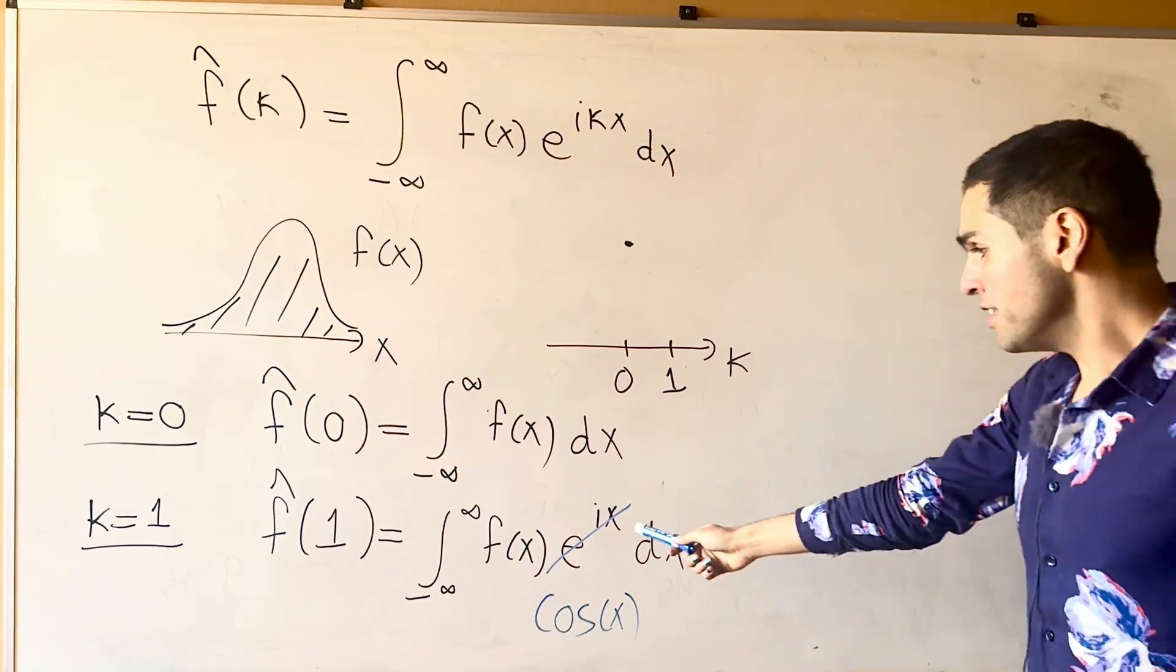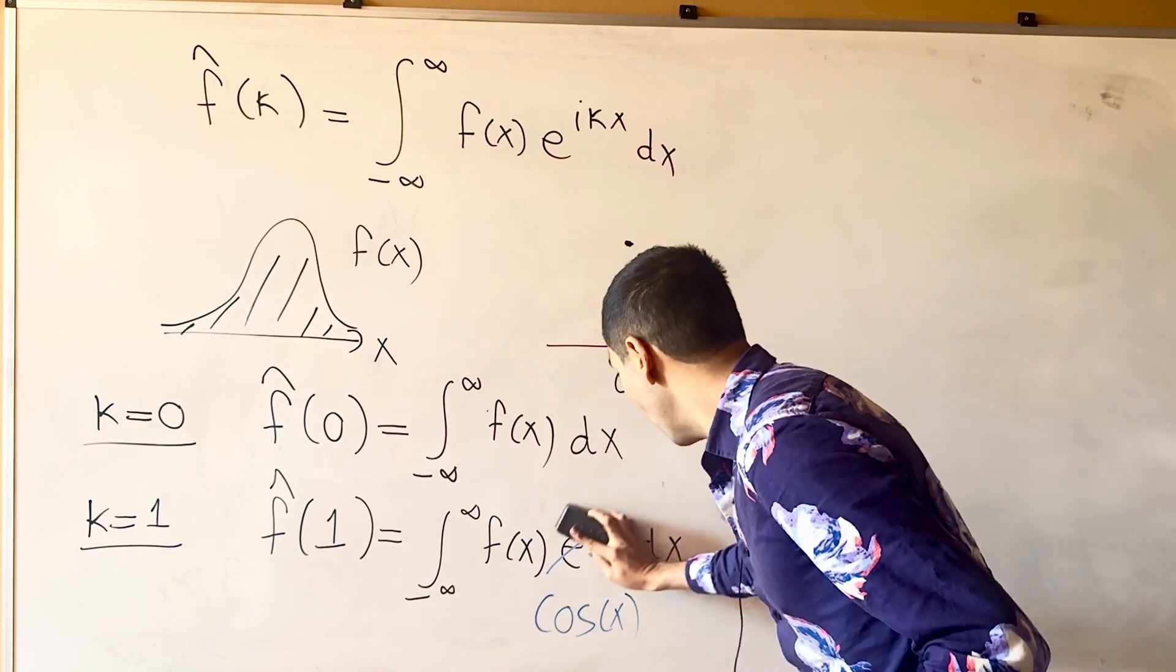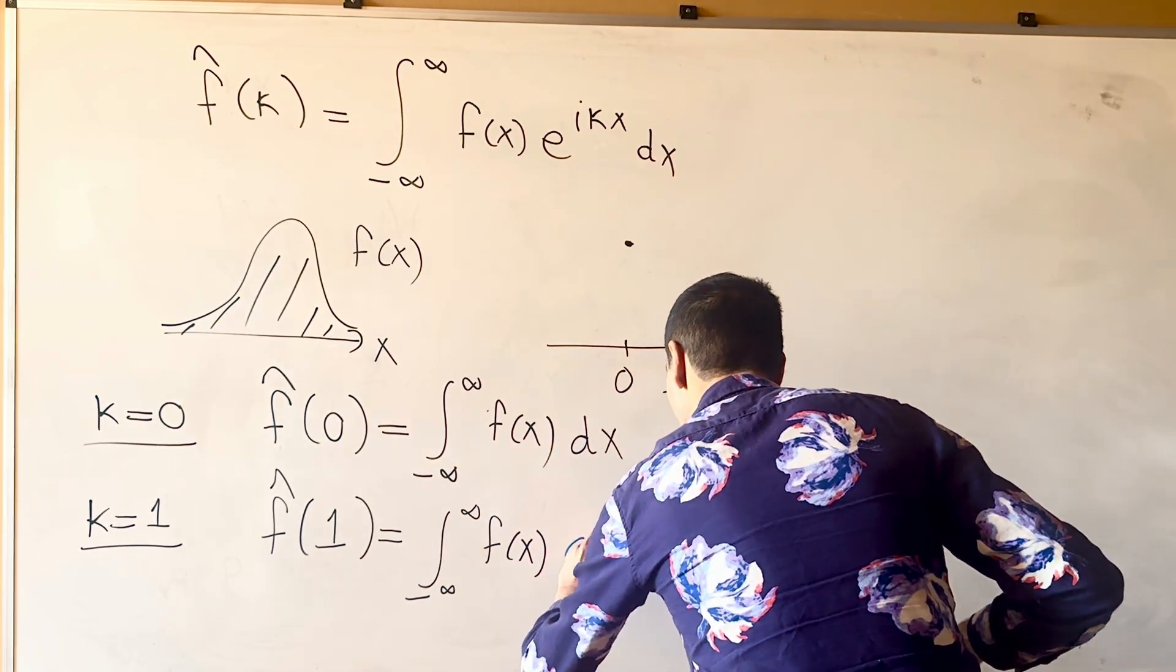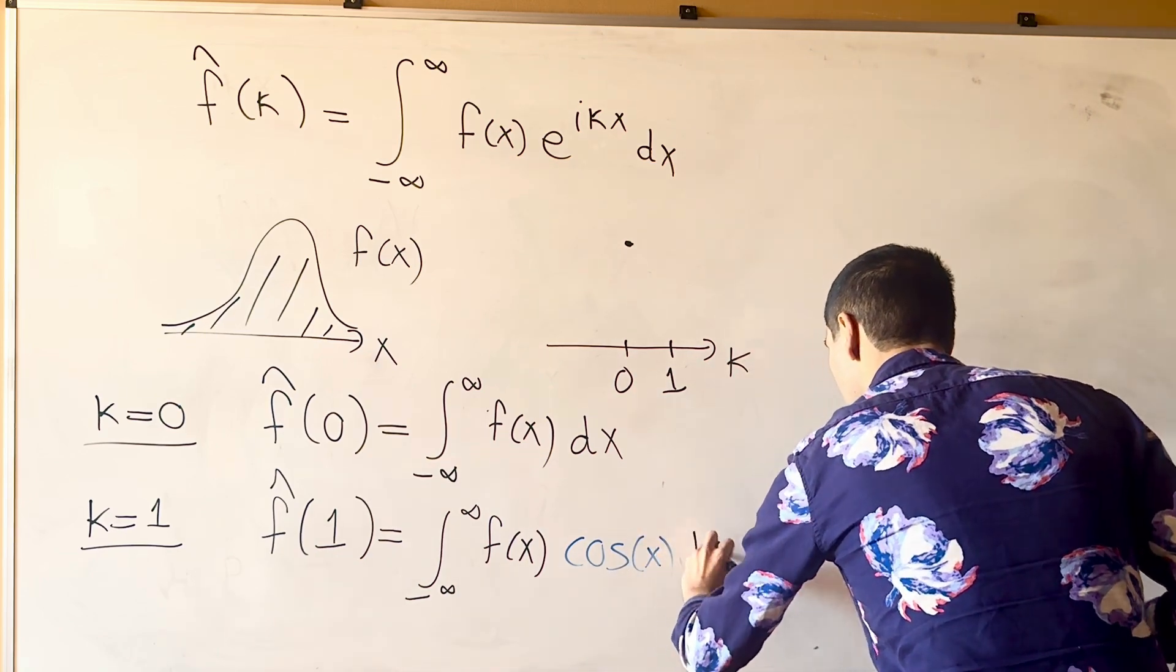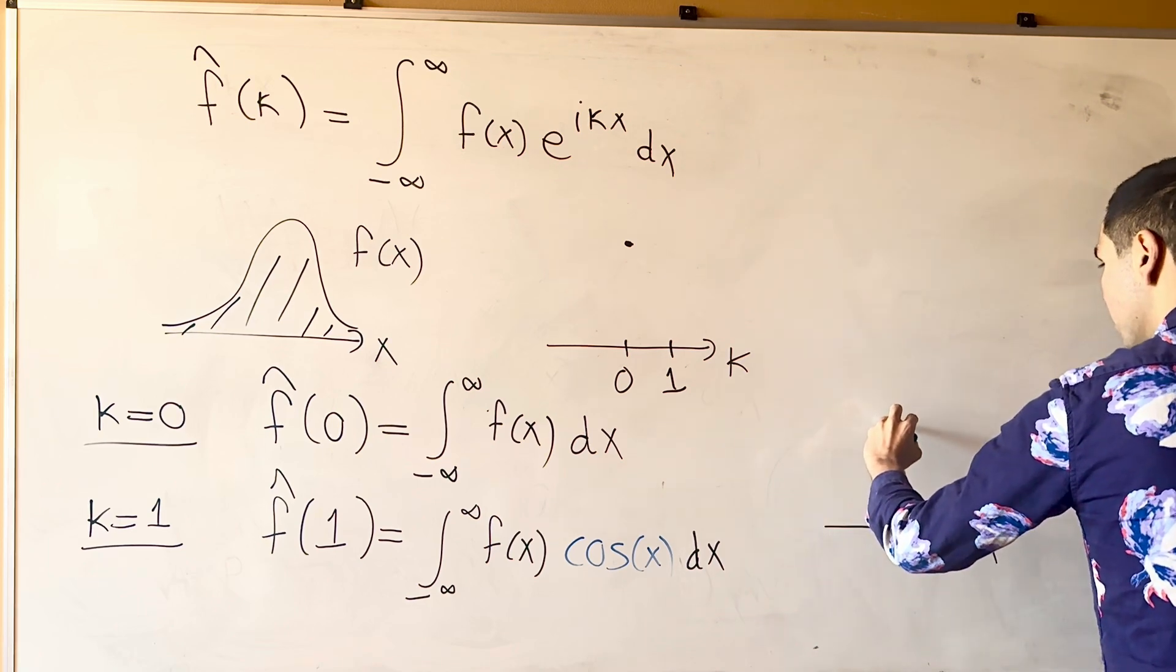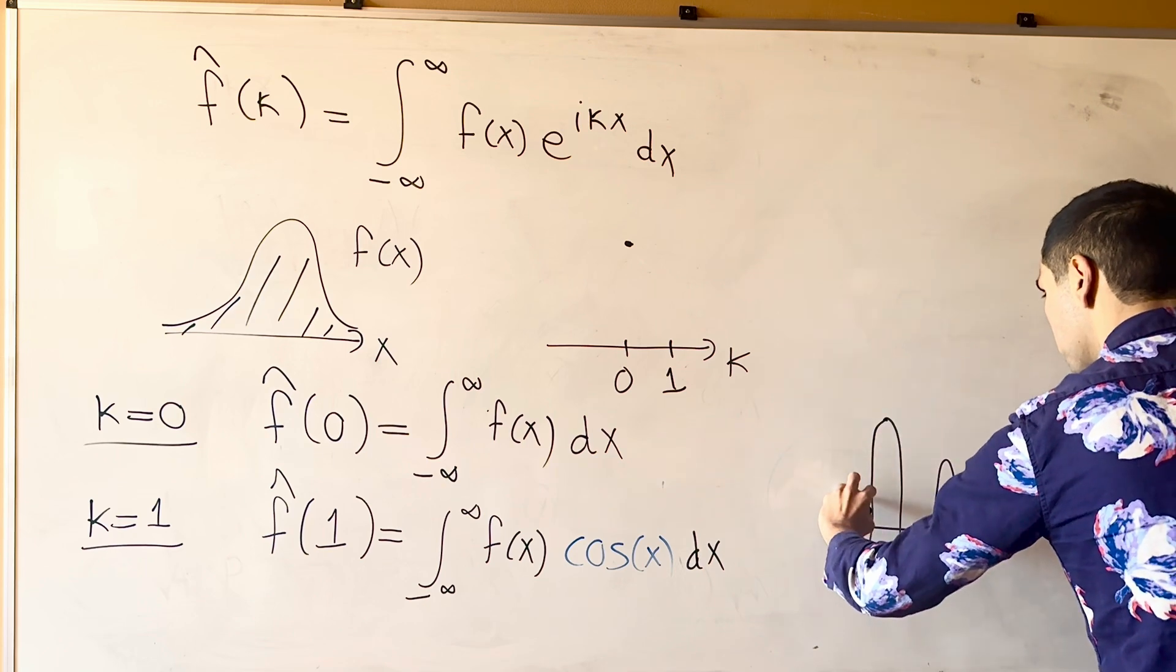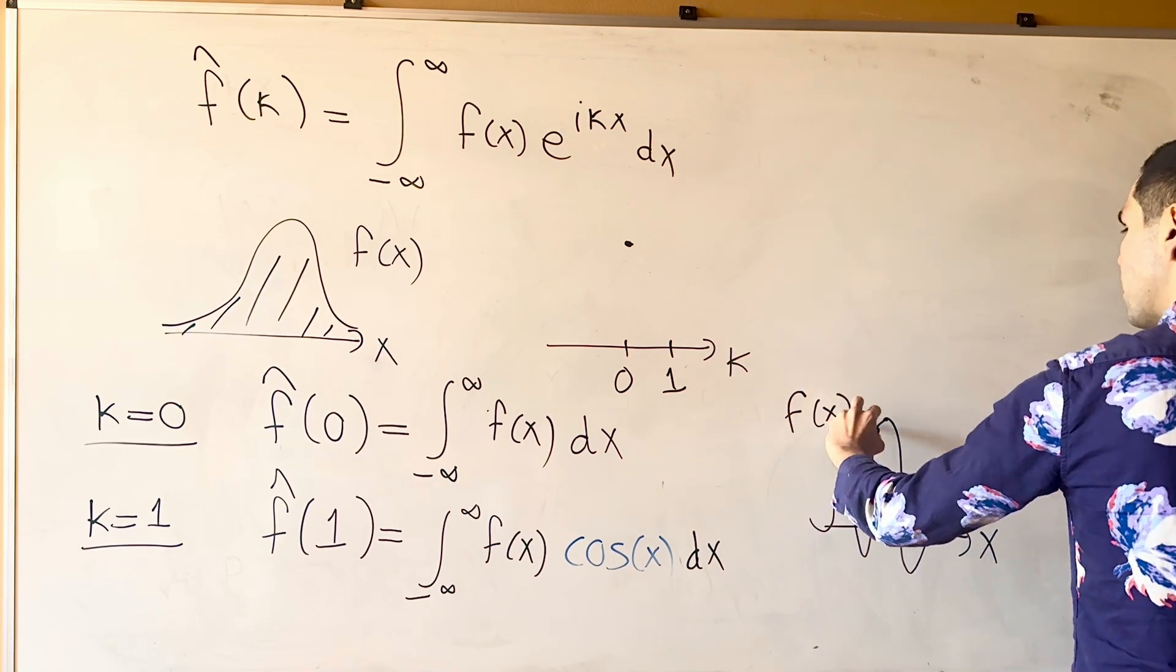And then, what is f of x cosine of x? Well, it's a more squiggly function. Again, f of x cosine of x dx. Because you're still taking f, but now you're multiplying by cosine, so it might look something like that. So, this is f of x cosine of x.